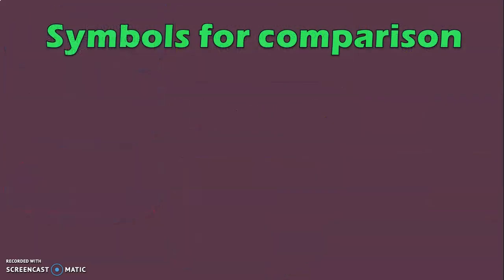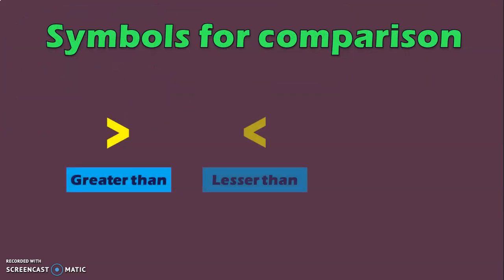Let us have a quick revision of the symbols used for comparison. This is the greater than symbol. This is the lesser than symbol. And this is the equal to symbol. It is very important to know these three symbols — only then can comparison of numbers be done and the appropriate symbol placed.